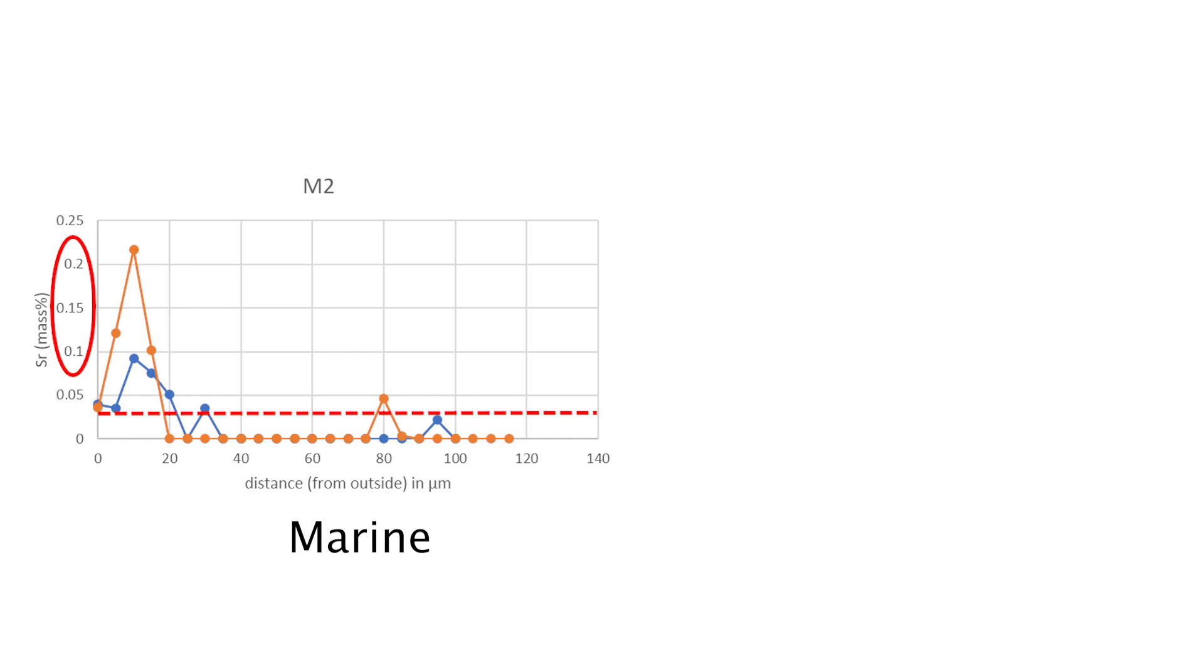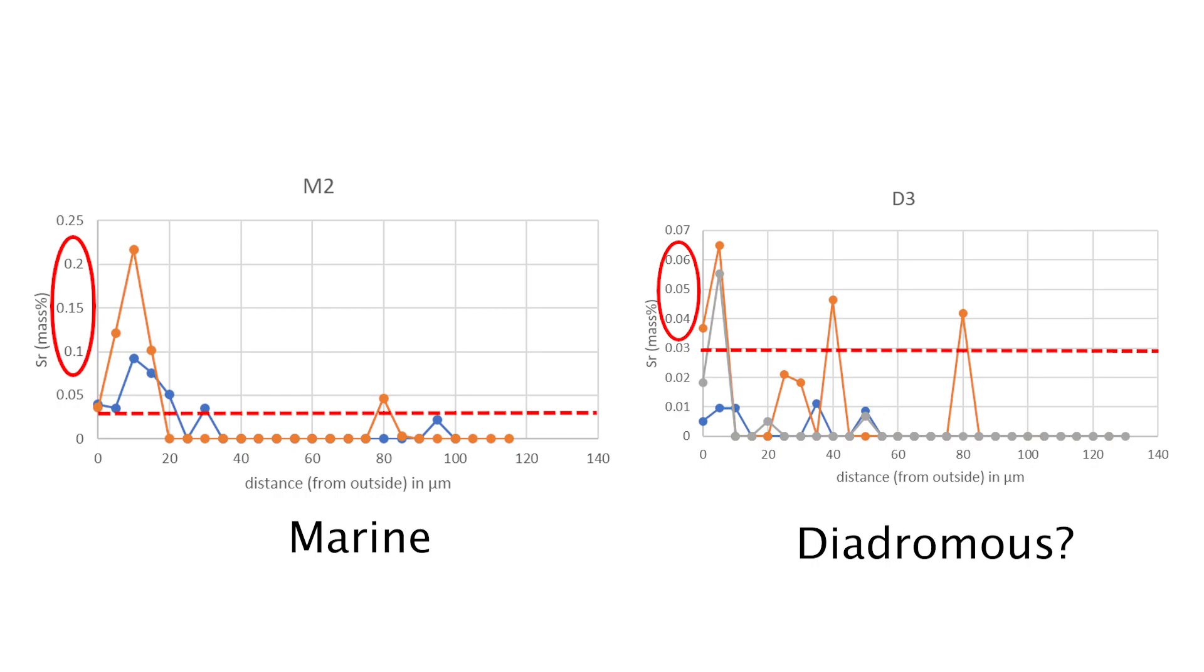However, those few measurements that were above the detection limit were in order of magnitude higher in the marine than in the potential diadromous samples. Most of these points fall into the hypermineralized enamel layers towards the outside of the scale, which seems to better preserve the geochemical signal than the porous dentine layers.